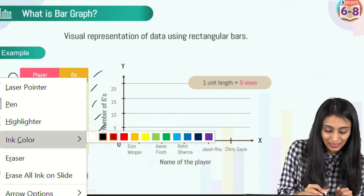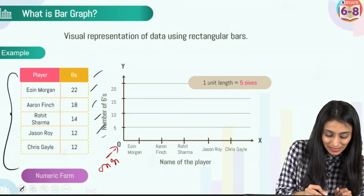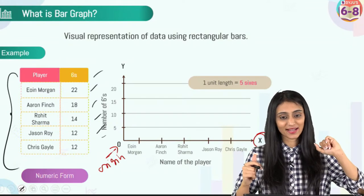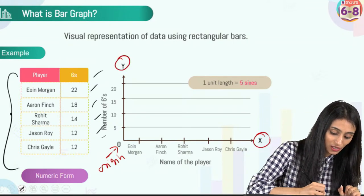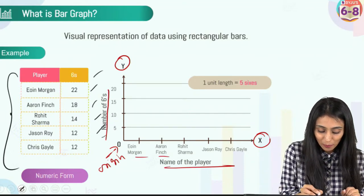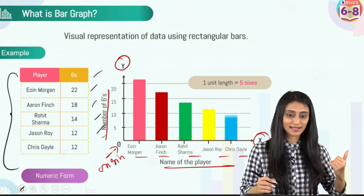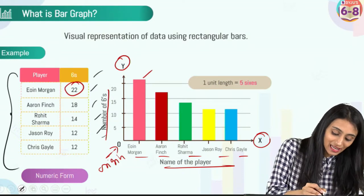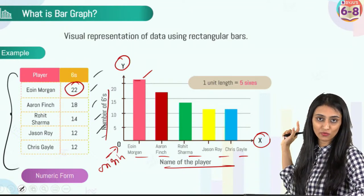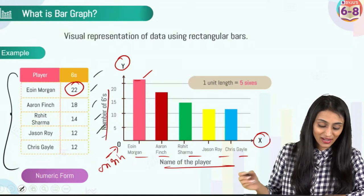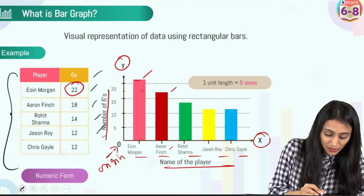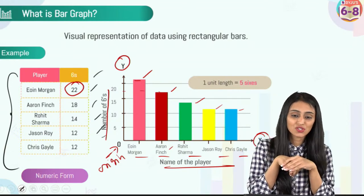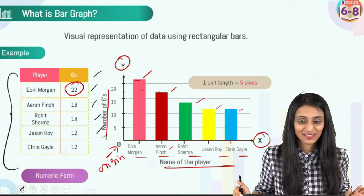This over here is the origin. On the x-axis — I hope you are all aware of what the x-axis and y-axis are — the names of the players are written. On the y-axis, the number of sixes scored is written. We use rectangular bars to represent the data: for the first player the number is 22, so you can see the length of the bar corresponding to the y-axis. Another player has 18, another 14, and two players have 12 each, so their bars are equal.